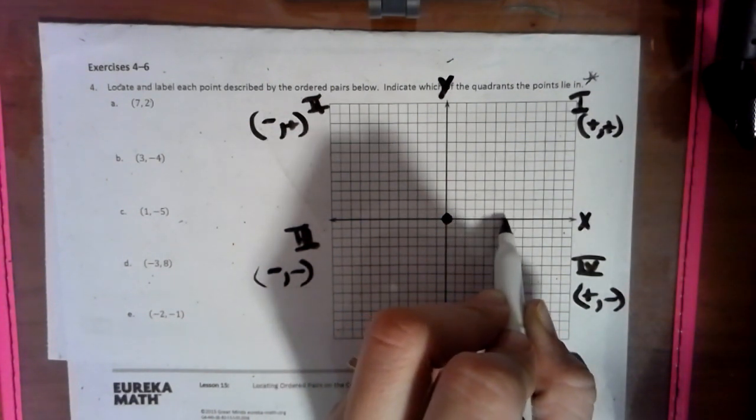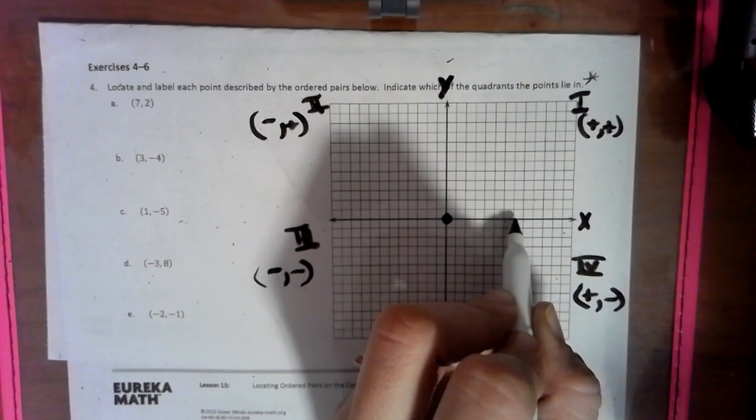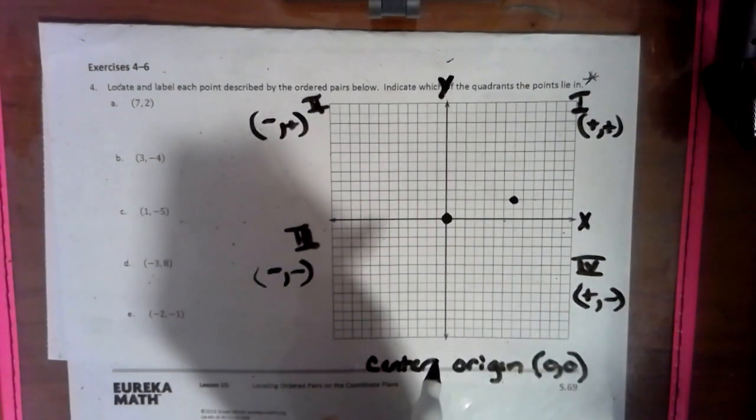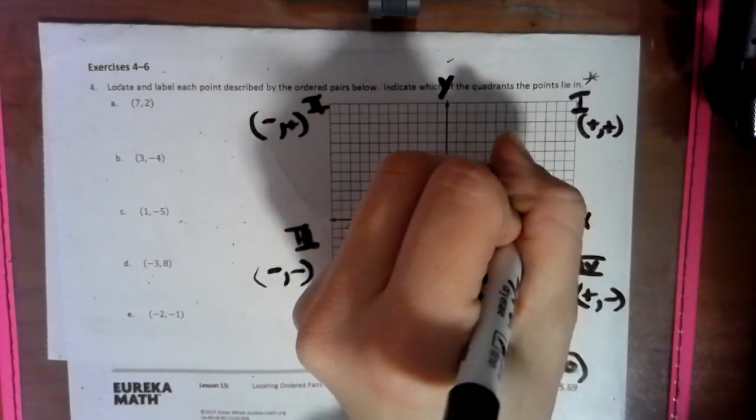So 1, 2, 3, 4, 5, 6, 7. Notice how I'm not putting my pen down yet. So I'm over 7, and then I'm up 2, and that's where I plot my dot for 7, 2.